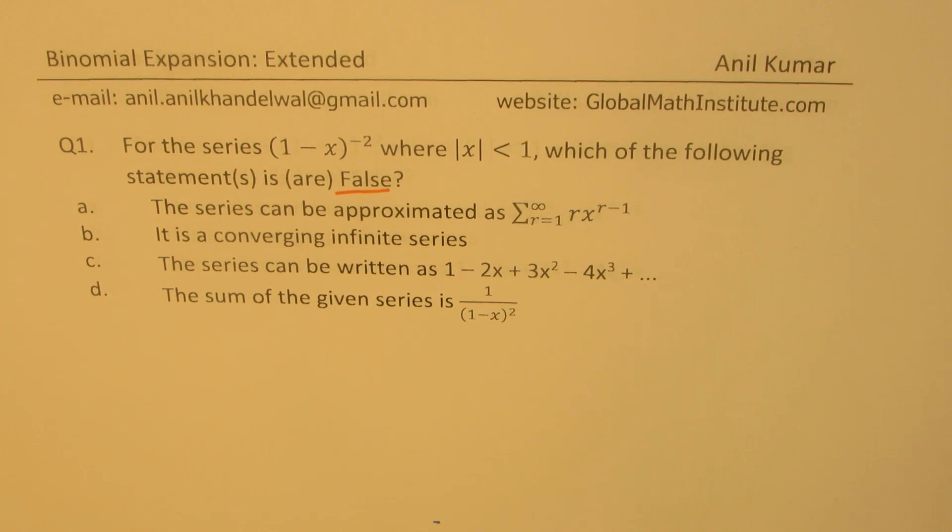For the series (1 - x)^(-2) where |x| < 1, which of the following statements are false? Part a: The series can be approximated as the sum from r=1 to infinity of r·x^(r-1). Part b: It is a converging infinite series.